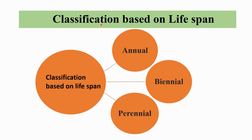Classification based on lifespan has three types: annual crops, biennial crops, and perennial crops. Annual crops complete their entire life cycle in a single season and then die. Biennial crops grow for two seasons — in the first season they show vegetative growth, and in the second season they show flowers and seeds. Perennial crops persist for more than two seasons; after reproduction they do not die and continue to grow indefinitely year by year.